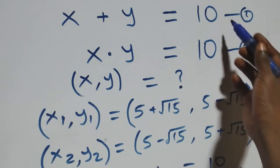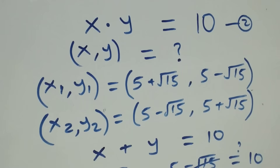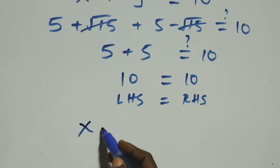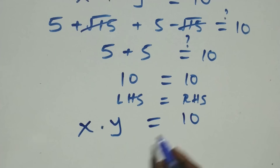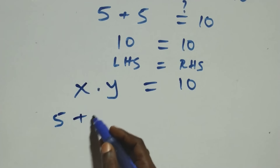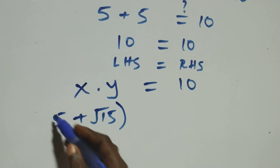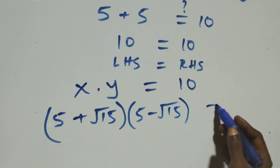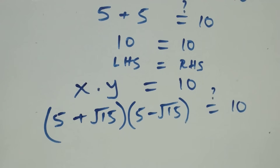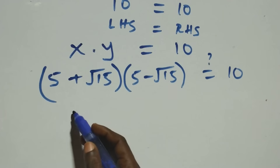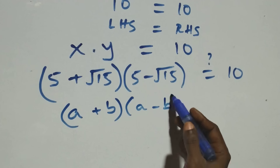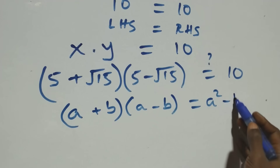For equation two, x times y equals ten: we have (five plus root fifteen) times (five minus root fifteen) equals ten. This follows the identity (a + b)(a − b) equals a squared minus b squared.